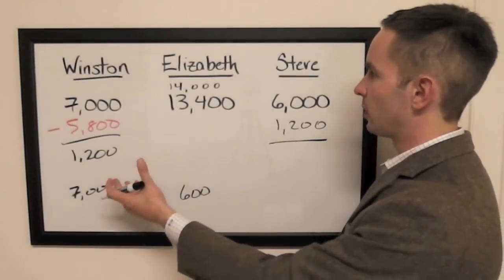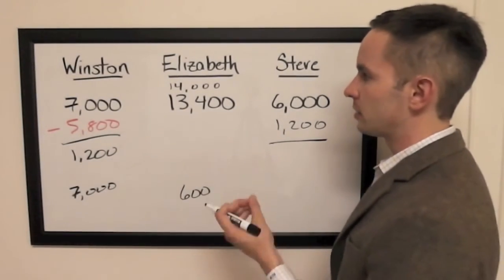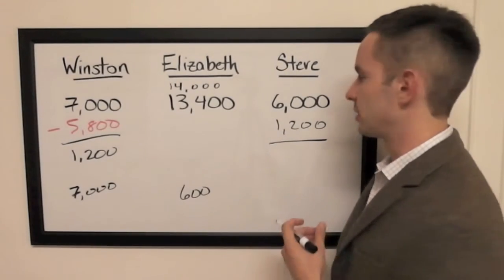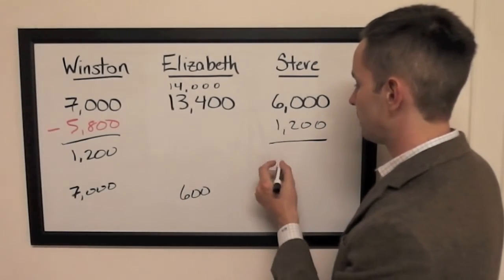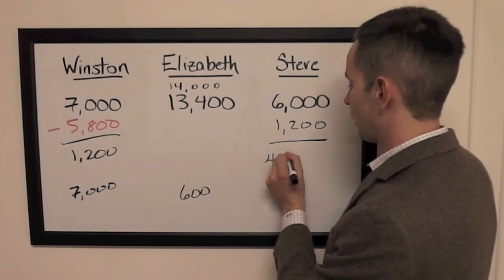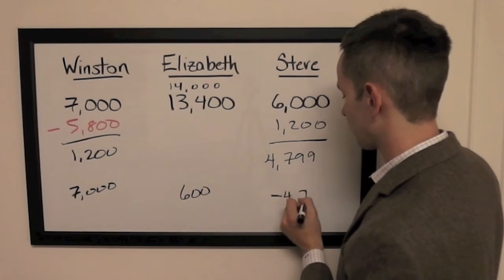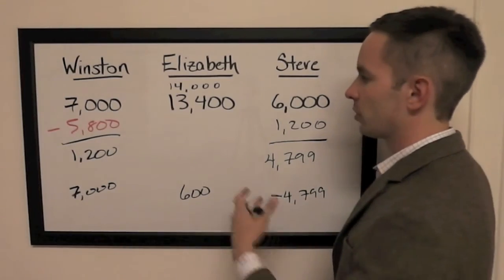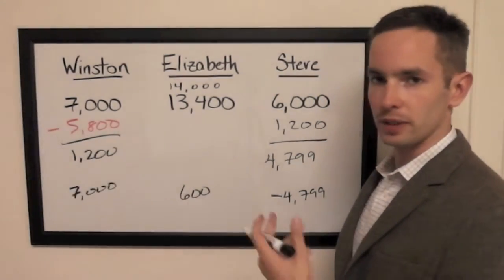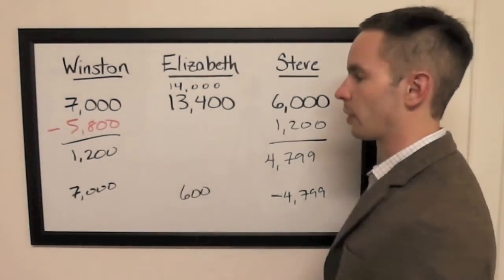That means he can wager at most 4,800 minus 1, 4,799. And normally I would say you should wager at least 1,001 to get above Winston, but Winston has no reason not to wager big.